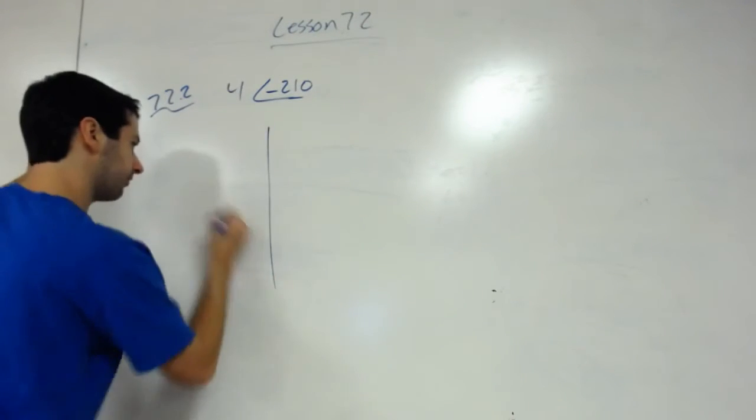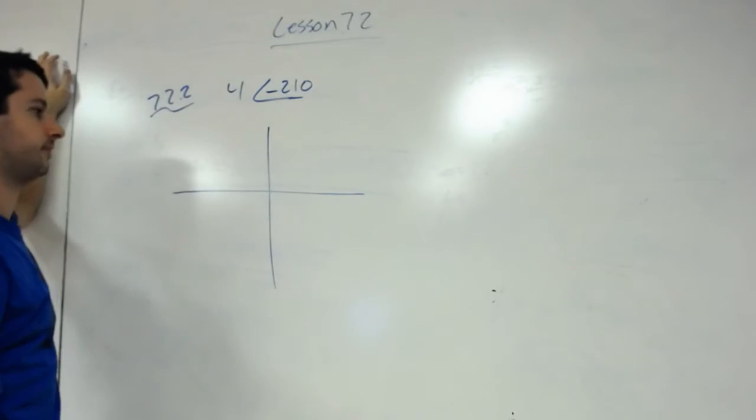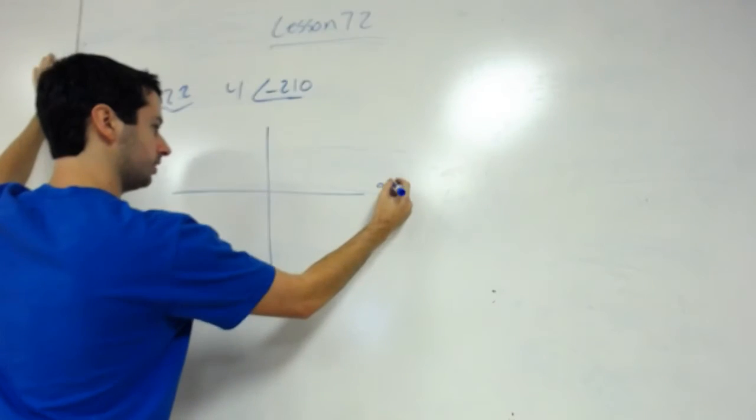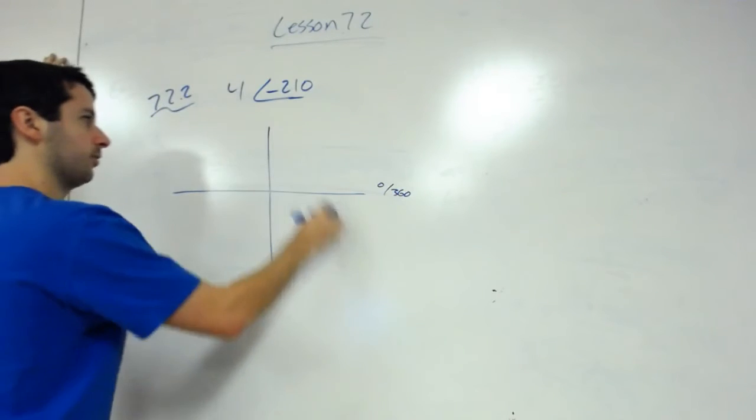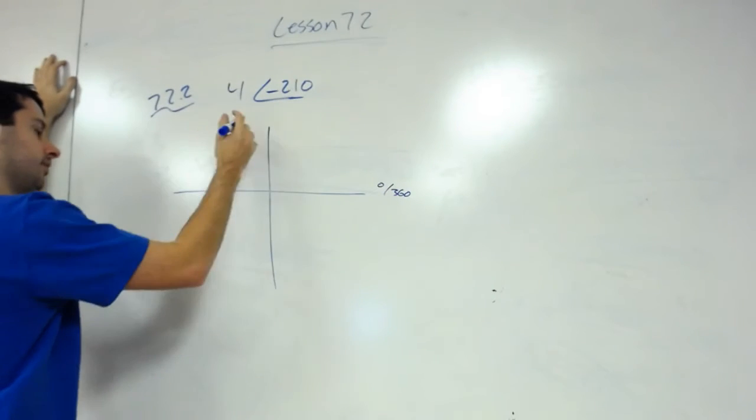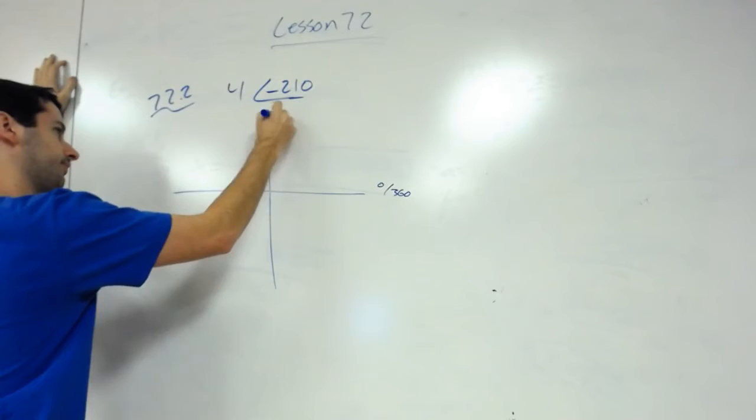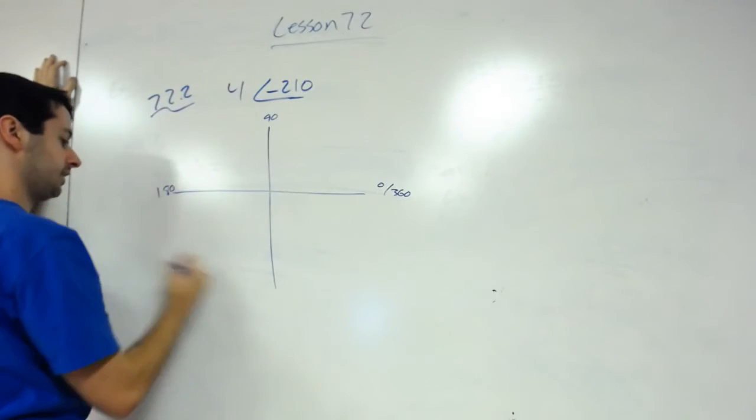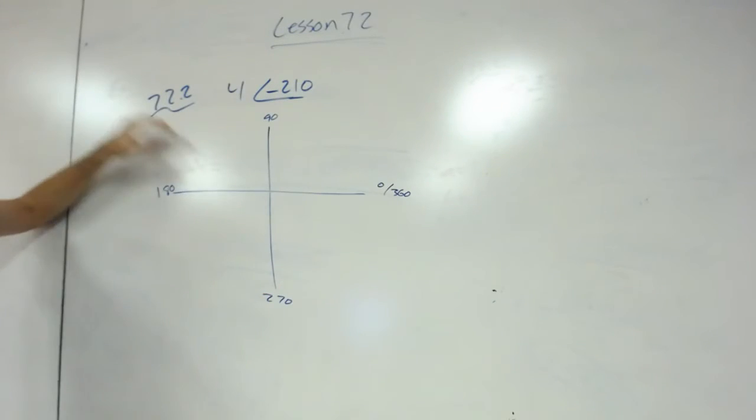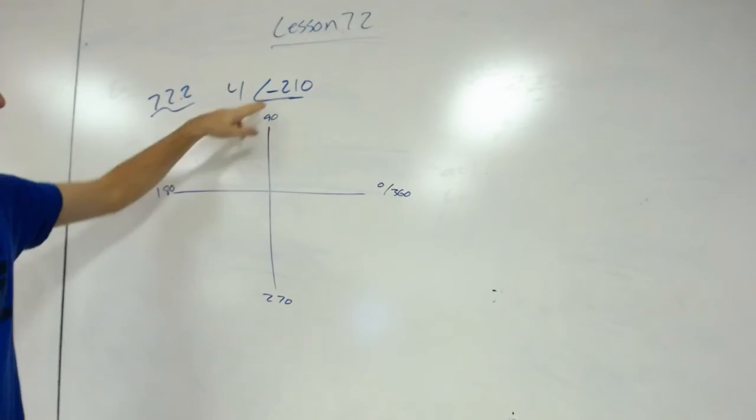We still first start by drawing our coordinate grid. If you remember, this was 0 slash 360, we call this 90, 180, 270, and we would go counterclockwise. Well, all a negative angle tells us to do is to go clockwise now. We go clockwise 210 degrees.